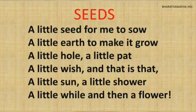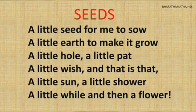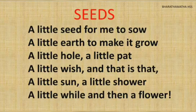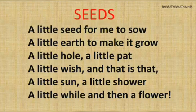In this poem the poet says that he has a small seed to sow and to make it grow into a plant. The first thing he needs is a little earth, that means some soil. Then make a hole and put it inside, and before covering it with the soil, pat it lovingly and wish for a healthy plant to grow out of that seed. What else does a seed need to sprout? Yes, a little sun, a little shower — that means it needs sunlight and water.